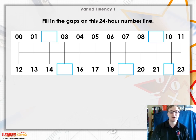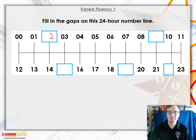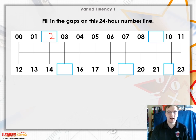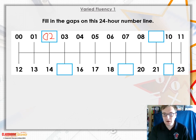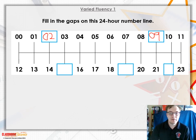Starting with the first box, the answer would be 2, but something important about 24-hour time is that they always have four digits, so it's important that you put the zero in front of it — making it 02:00. Same with this one: it would be 9, but make sure to put the zero in front to make four digits — 09:00. Then over here would be 15, because 15 is in between 14 and 16.